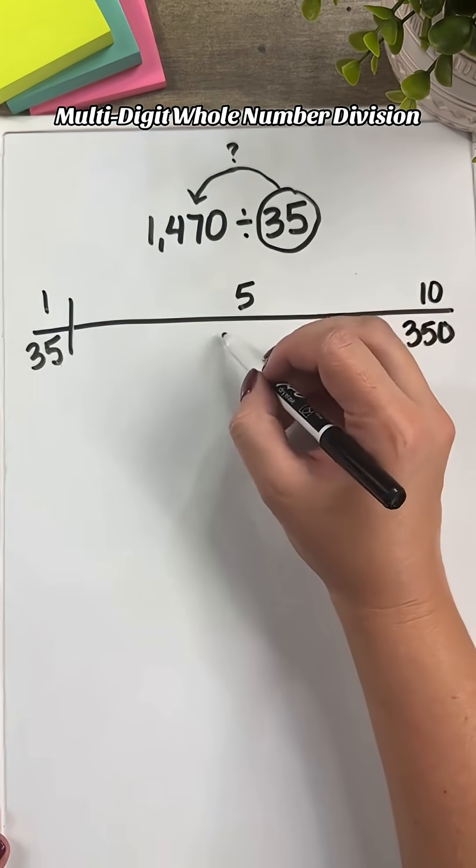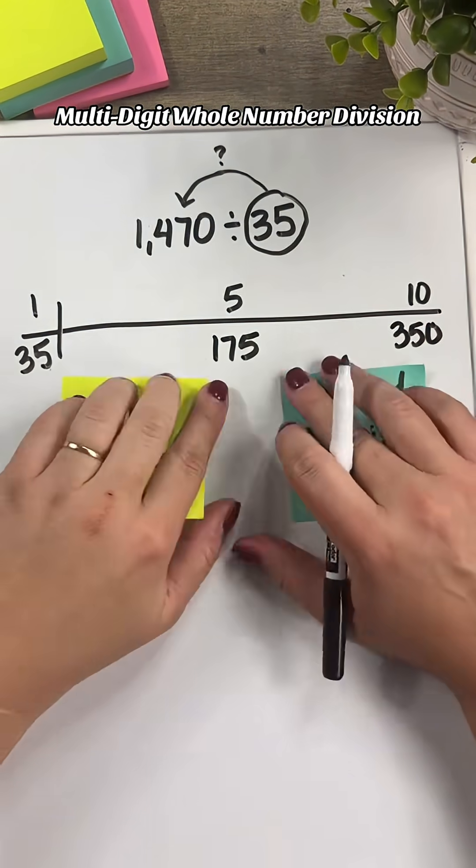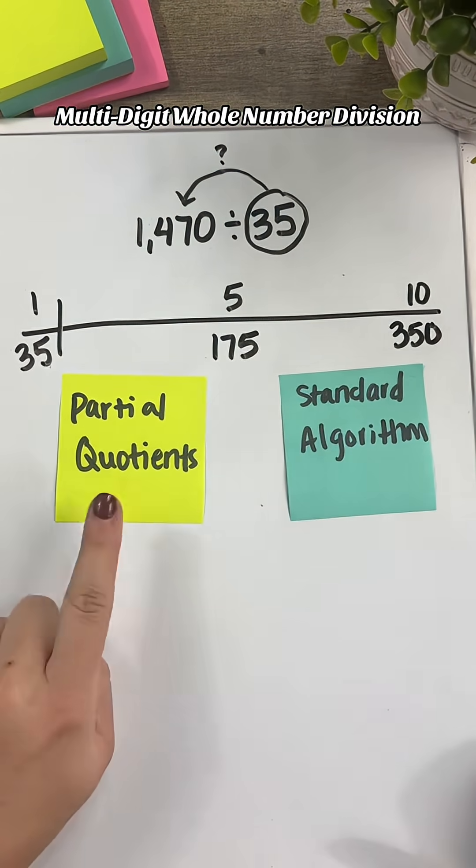If I know that 10 groups of my divisor is 350, half of that would be 175. Let's start with partial quotients.